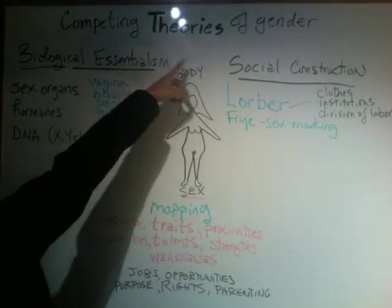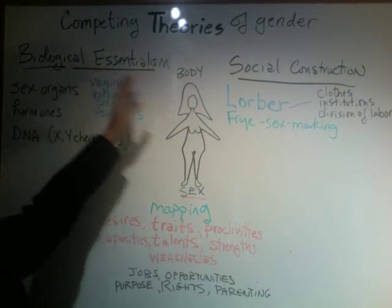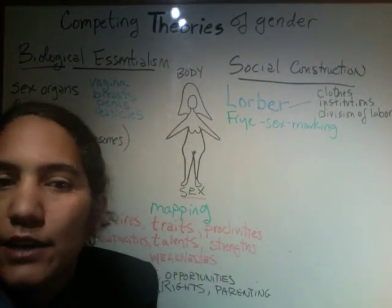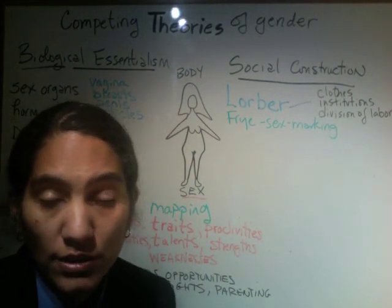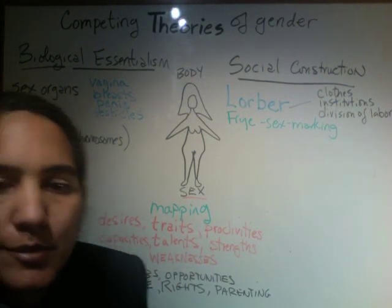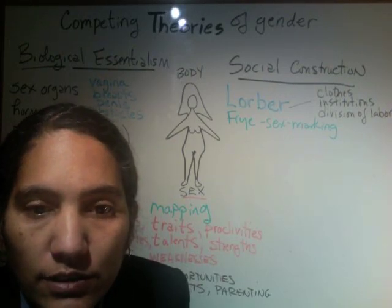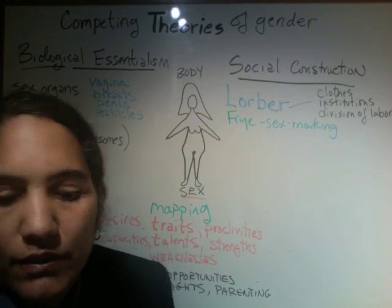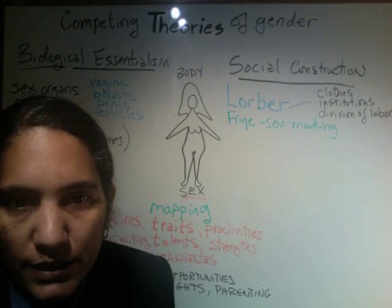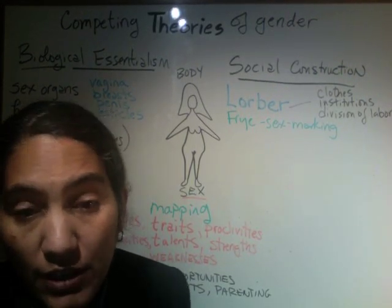We have on the one hand biological essentialism, and on the other the social construction of gender. Biological essentialism is actually the common sense notion of gender. Your average person on the street — most people that you talk to in your family — will probably think that gender is biologically essential. There's a lot of things in the media which would lead you to believe that that's a fact, so it's kind of this common sense notion that we can actually map gender onto bodies.